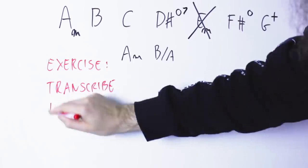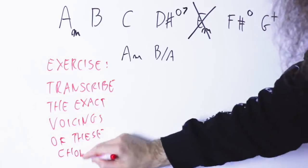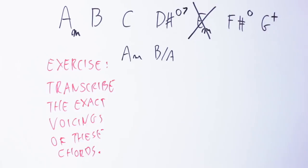Now this whole thing can sound more interesting if you start using different inversions and different positions for this A minor and this B slash A.